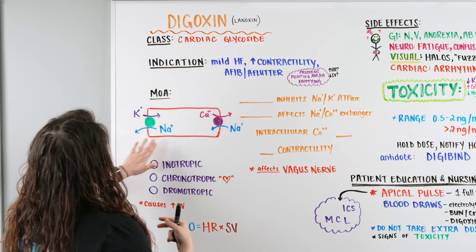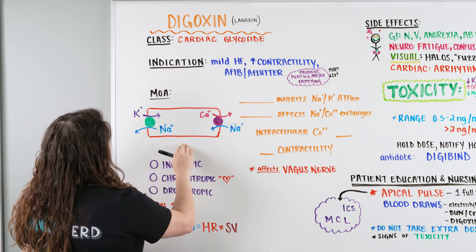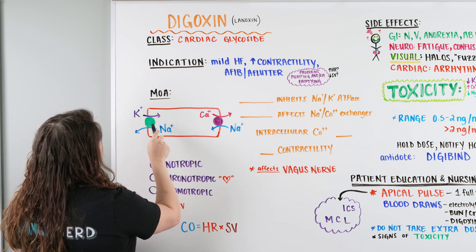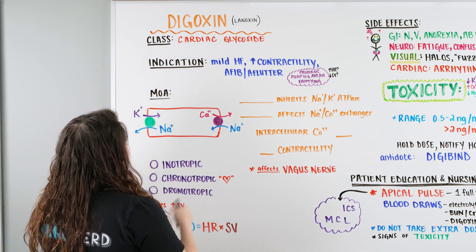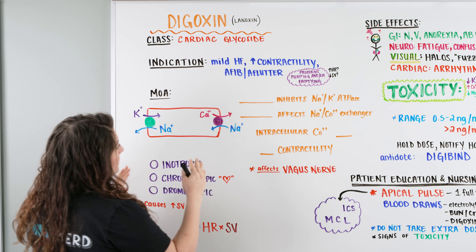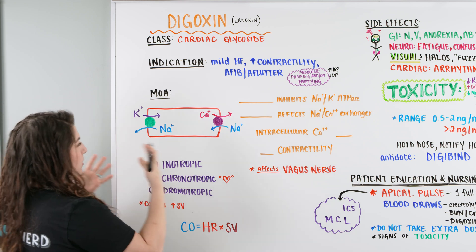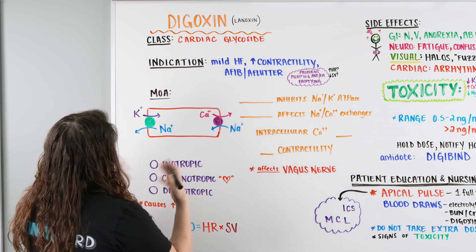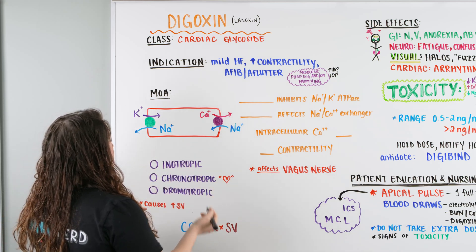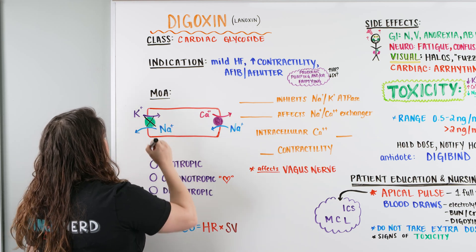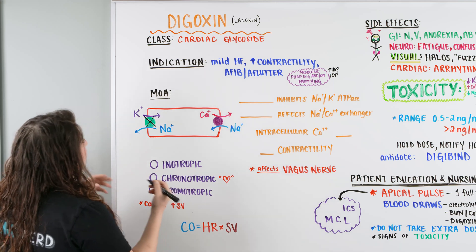Looking at a myocardium cell, we know that on all of our cells we have a sodium-potassium ATPase. In the myocardium, potassium gets pumped into the cell and sodium gets pumped out of the cell — that works normally every day. What happens is Digoxin comes along and it inhibits this ATPase — it doesn't necessarily turn it off all the way, but it slows it down significantly.